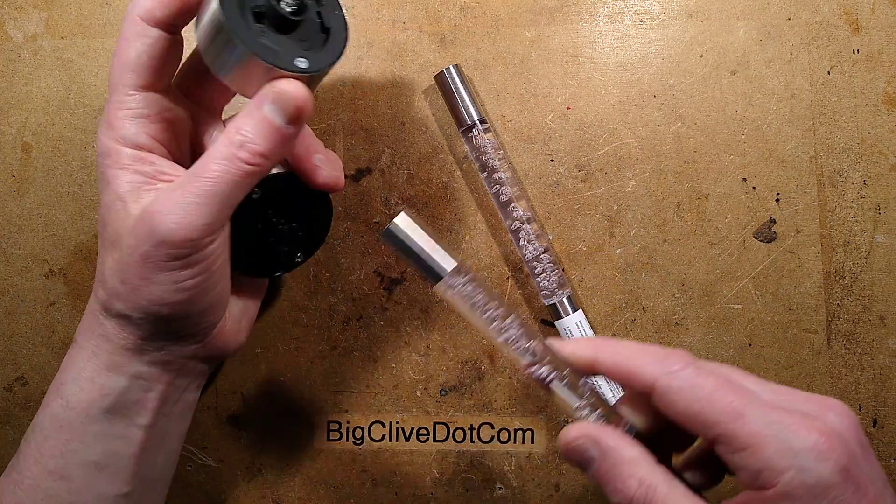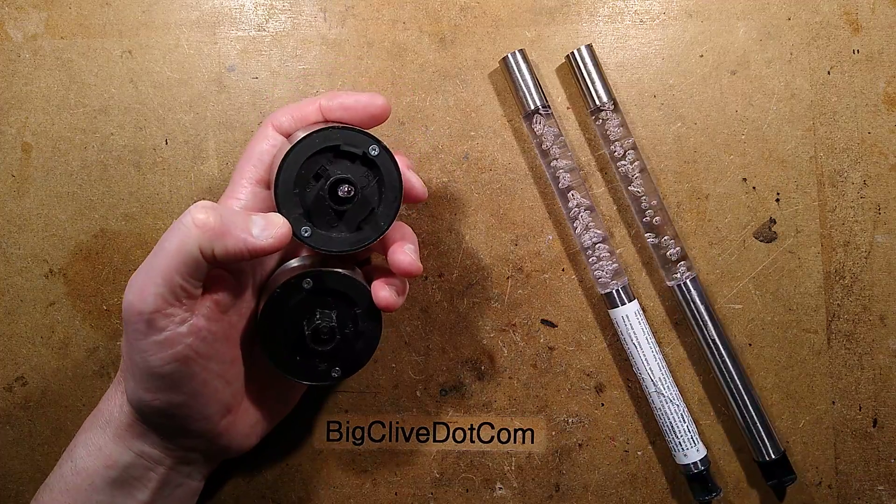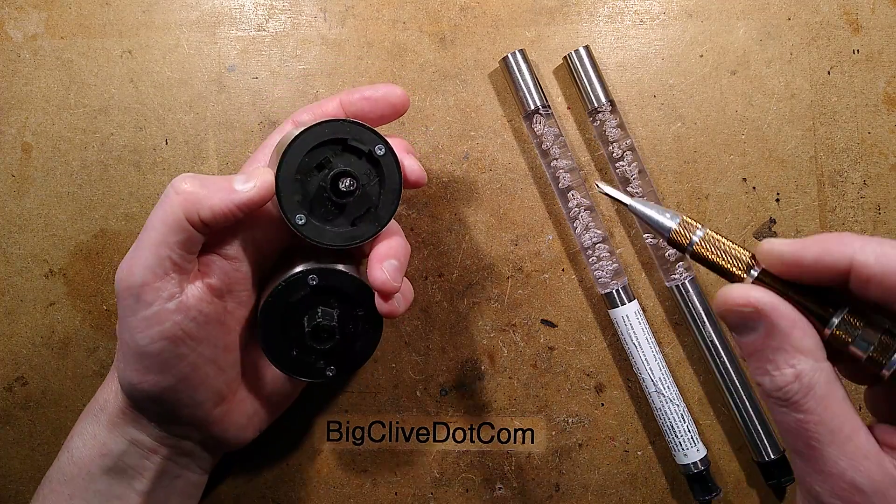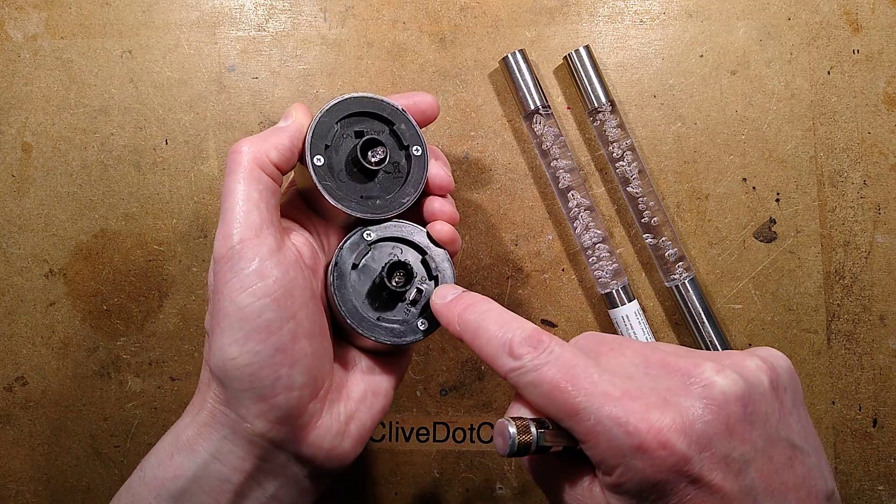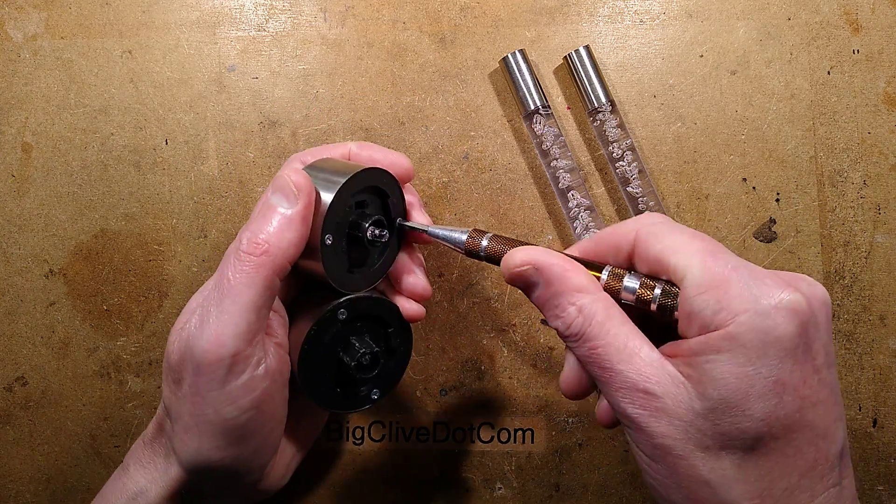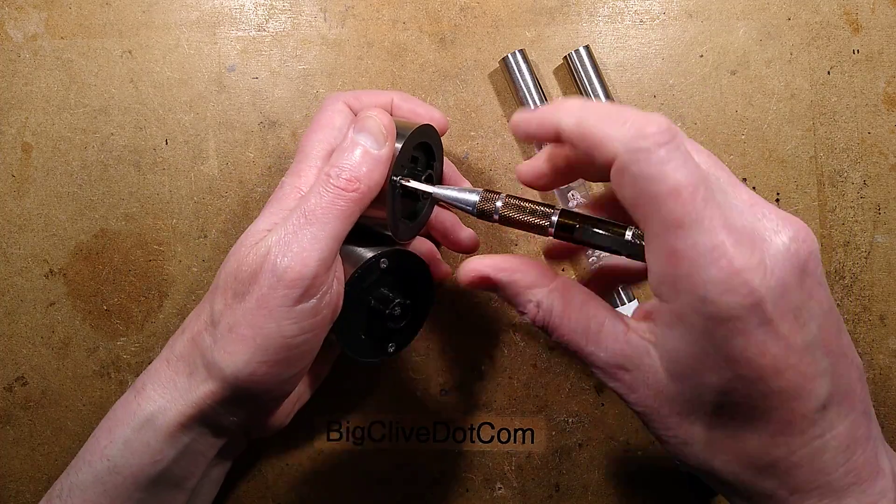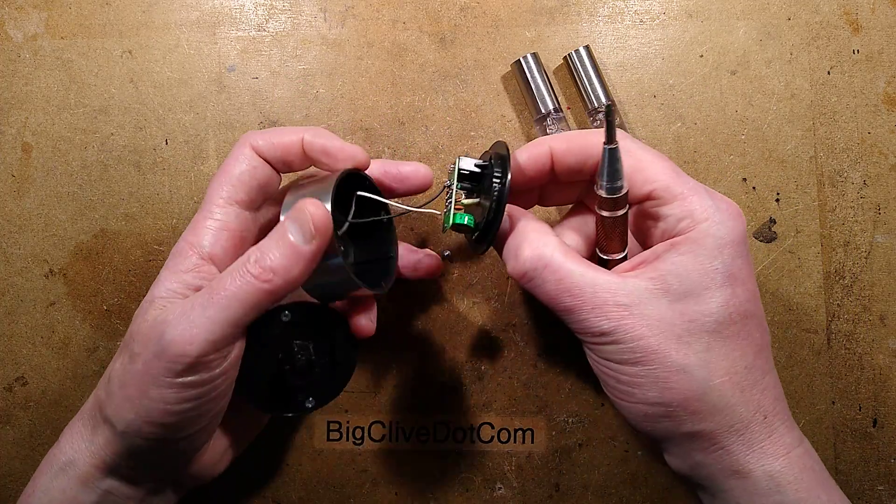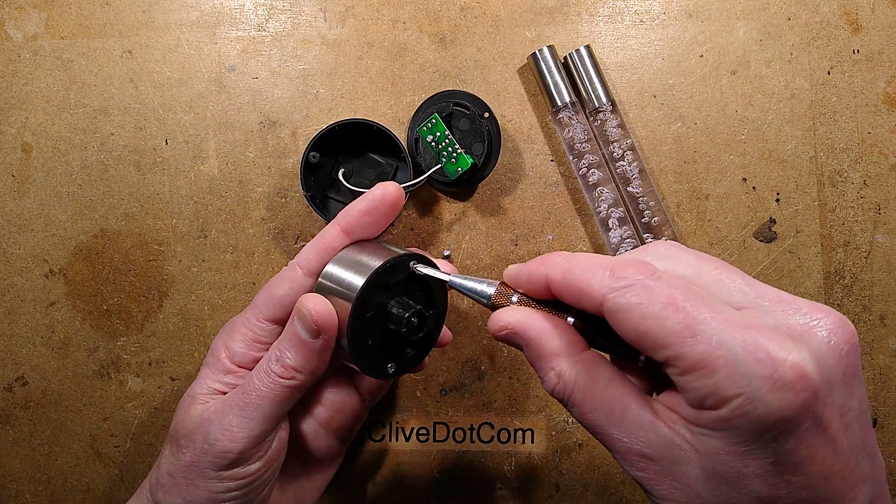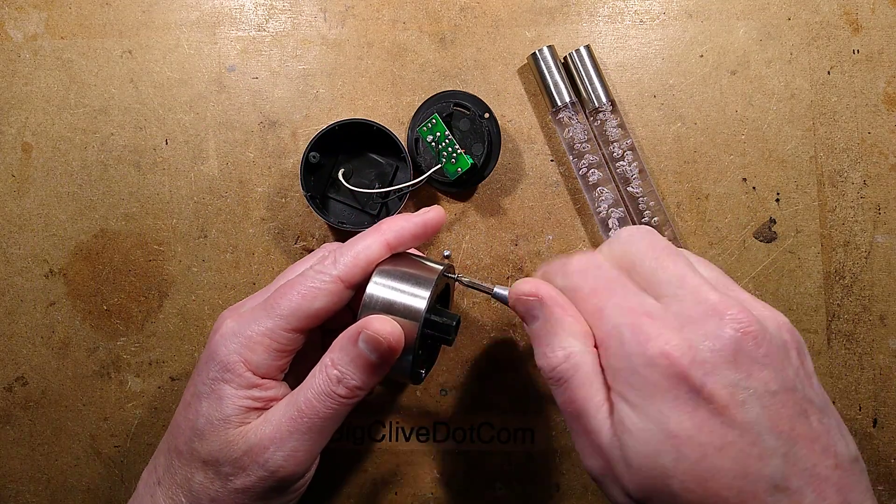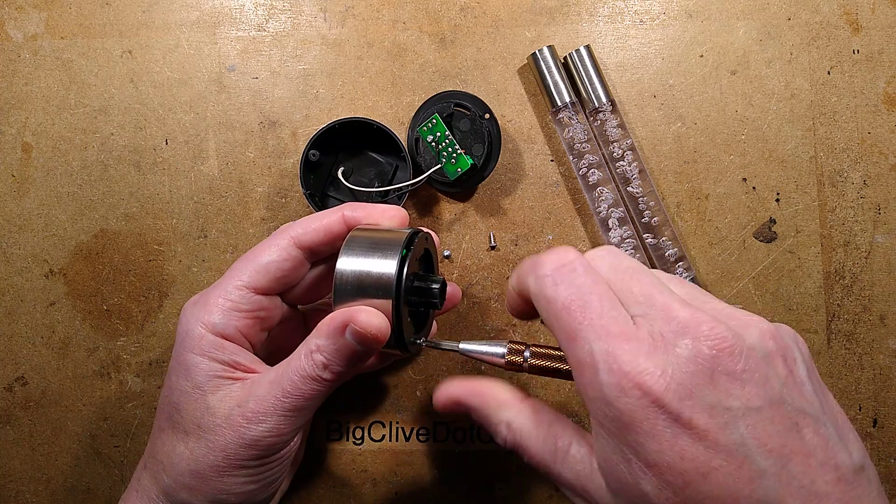Note that this one has a matte finish and this one has a glossy finish. That's important because they've got different circuit boards. I'll pop them open, revealing a long thin circuit board and a distinctly square circuit board.